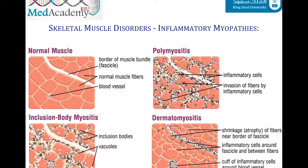In polymyositis, inflammatory cells invade healthy muscle cells, which become rounded and variable in size. In dermatomyositis, inflammatory cells are centered around blood vessels at the borders of the muscle fiber bundles (fascicles), causing peripheral fibers to shrink; inflammatory cells may form a cuff around blood vessels. Inclusion body myositis is characterized by muscle fibers containing empty bubble-like vacuoles and clumps of cellular material called inclusion bodies, with inflammatory cells visible between the fibers.